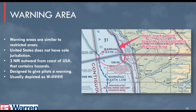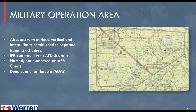Warning areas are similar to restricted areas, but often the United States doesn't have sole jurisdiction — usually three nautical miles out from the coast, containing hazards. These warnings are aimed mostly at manned aircraft, but if you're on a boat you'd want to be aware. Warning areas are usually depicted as a W dash followed by several numbers — for example, W-237B Low — letting you know to take extra precaution.